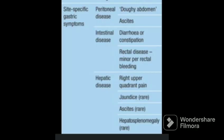Site specific gastric symptom depends on the area involved. The most common three areas are peritoneal, intestinal and hepatic area. Peritoneal disease on per-abdominal examination, doughy abdomen is felt as well as ascites is present which has exudative fluid as already discussed.